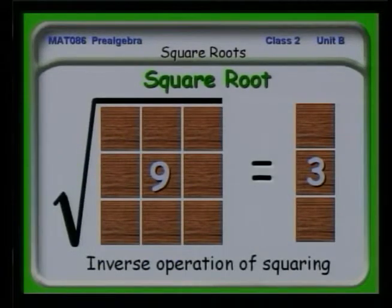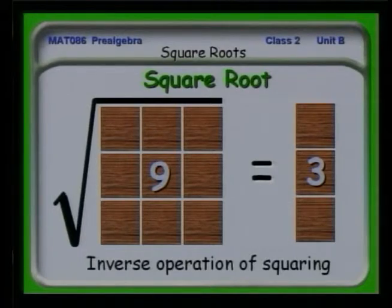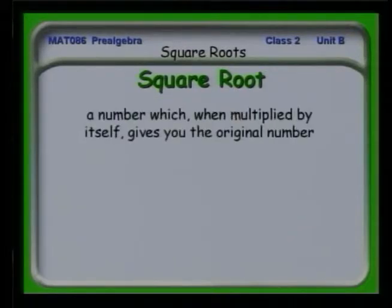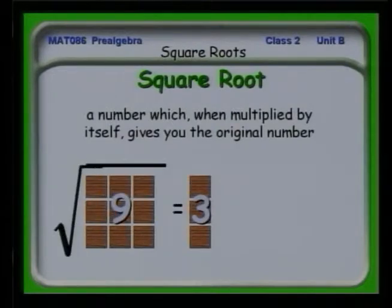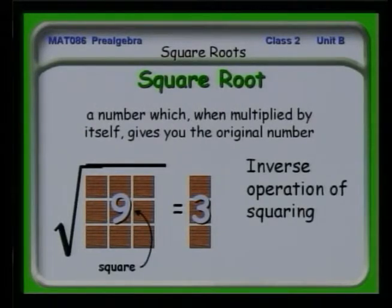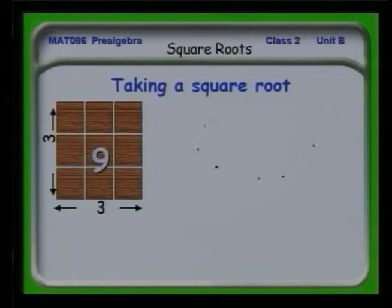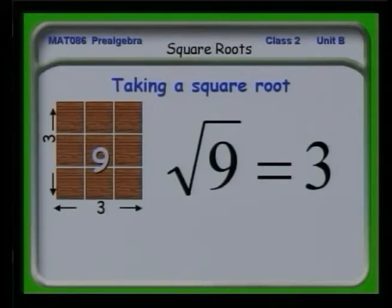The inverse operation of squaring — suppose we have the square to start with and we want to go the other way — that's called the square root. So in this case, the square root of 9 is 3. The square root is a number when multiplied by itself gives you the number you started with. The square root of 9 is equal to 3. 9 is the square, and 3 is the square root of that. This is how we would write it mathematically: the square root of 9 is 3.